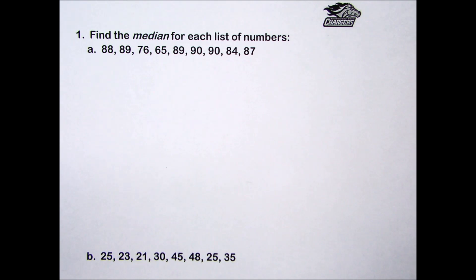Practice set problem number one found on page five: find the median for each list of numbers. To find the median for a group of data, we first need to put the data in order, sometimes called ranked from highest to lowest or lowest to highest. Then we'll find the middle number in this ordered list of data.